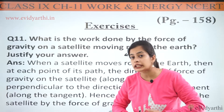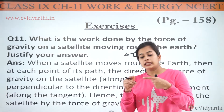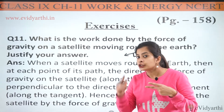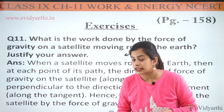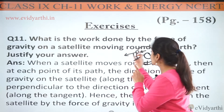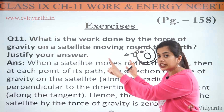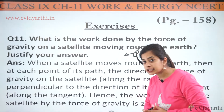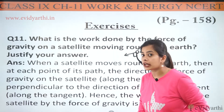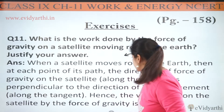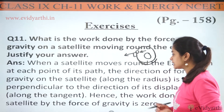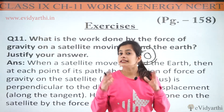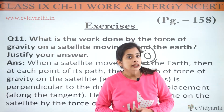For any work to be done, there are two essential requirements: there must be a force, there must be a displacement, and the displacement should be in the direction of the force applied. But that is not the case here. Our force is in the perpendicular direction, and the displacement direction is different. That is why we can say that no work is done here by the satellite. Hence, the work done on the satellite by the force of gravity is zero. Due to the earth's gravitational force, no work is done on the satellite.